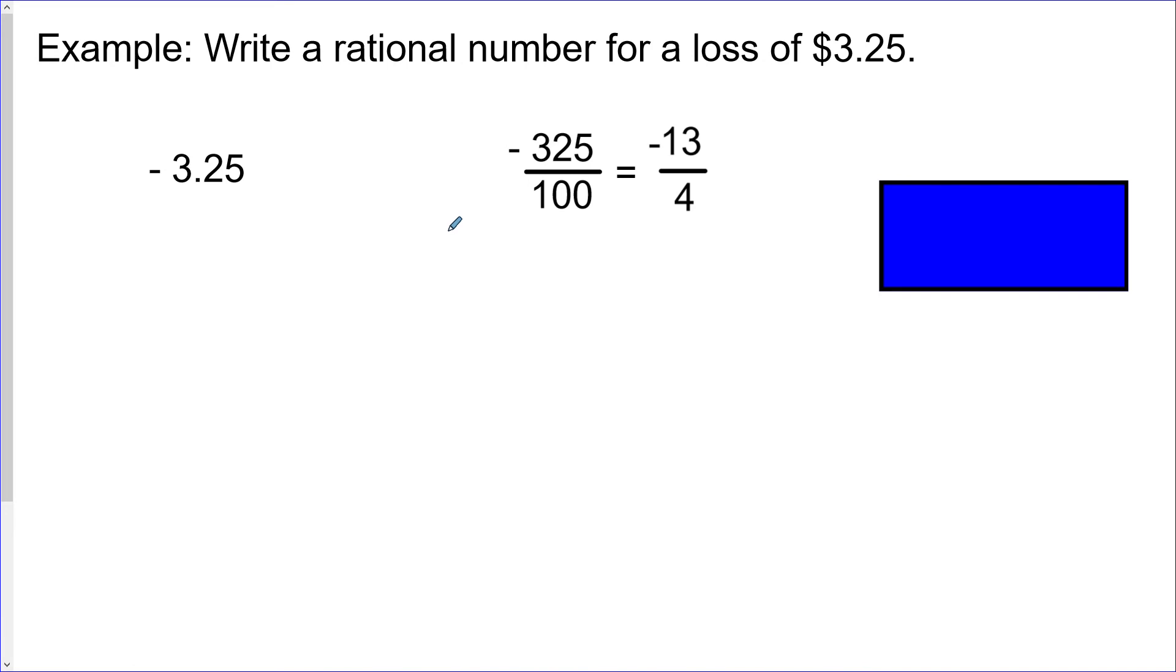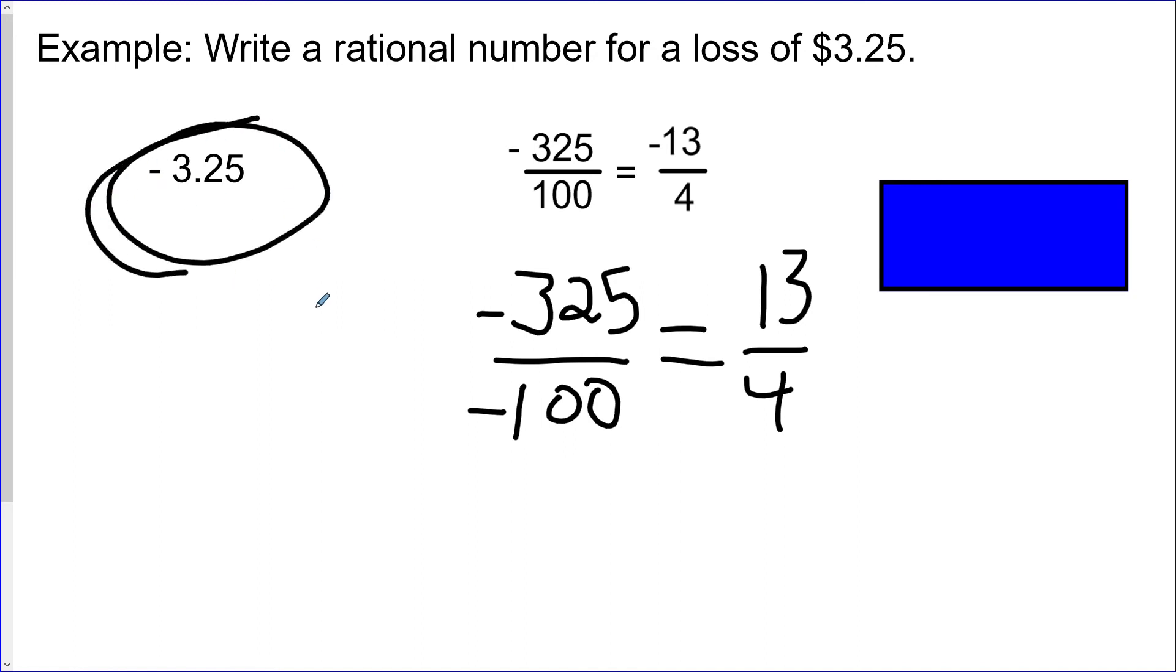Now it's very important here that the negative sign stays either on the top or on the bottom or out in front, but doesn't go to both. Just as a quick example here, if I were to put it on both the top and the bottom, so negative 325 over negative 100, well that equals positive 13 over 4. That doesn't equal negative 13 over 4, and now we've got a completely different number than we had to start with because it's lost the negative sign.